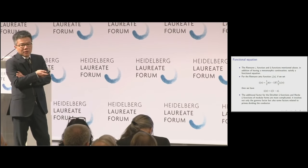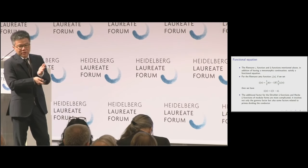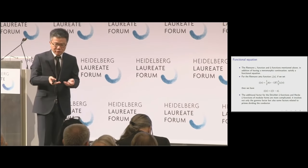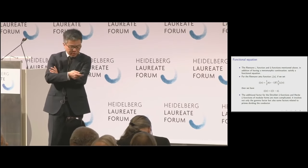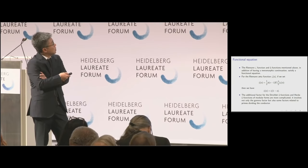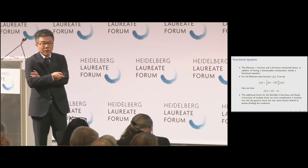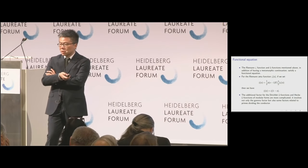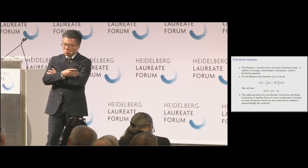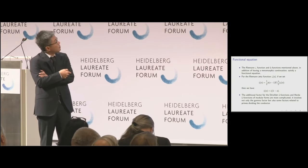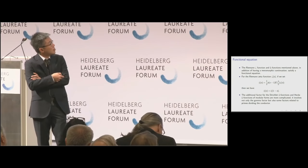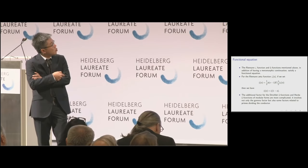It was easier to explain why meromorphic continuation is important — because you want to prove the prime number theorem. It's harder to explain why the functional equation is important, but it is really the same package and very important. On other examples — Dirichlet L-functions and L-functions attached to modular forms — the same kind of properties hold: meromorphic continuation and, after adding appropriate gamma factors, a functional equation analogous to that of the zeta function.